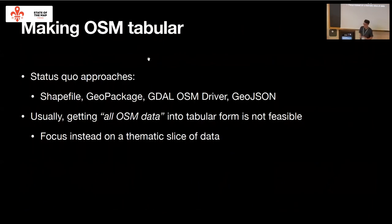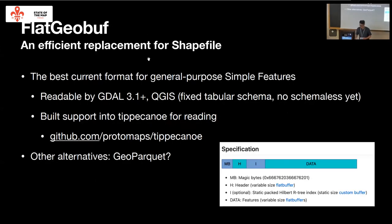So for making OSM tabular, some status quo approaches are using shapefiles, using geopackages. For lighter use, there's a GDAL OSM driver that uses a SQLite approach under the hood. GeoJSON is decent but kind of bloated — for really big datasets, like an entire country slice from OSM, GeoJSON can get unwieldy and has no spatial index. In many cases you still want to focus on a thematic slice of data, whether that's just waterways or just buildings. The biggest innovation in this area is a new format called Flat GeoBuf. The authors have put a lot of thought into it as an efficient, future-proof replacement for shapefiles. It's very slick in QGIS — it loads features much faster — and it's built into GDAL 3.1 or above.